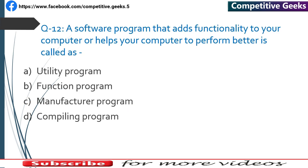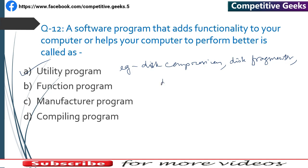Number 12: A software program that adds functionality to your computer or helps your computer perform better is called a Utility Program. Examples include disk compressor, disk compression, disk defragmenter, disk cleaner, and antivirus.